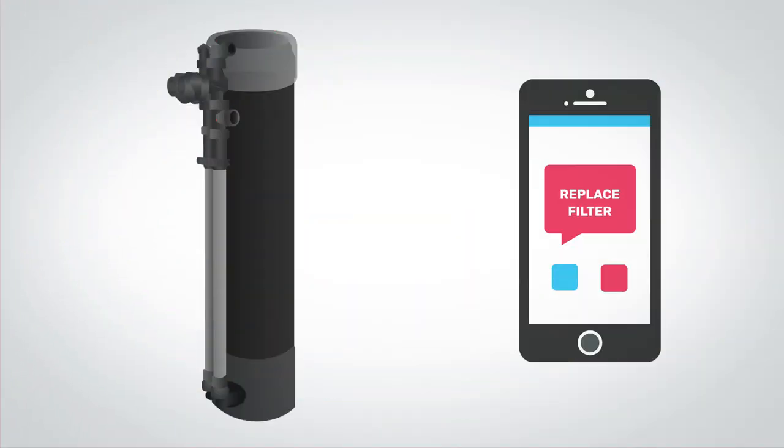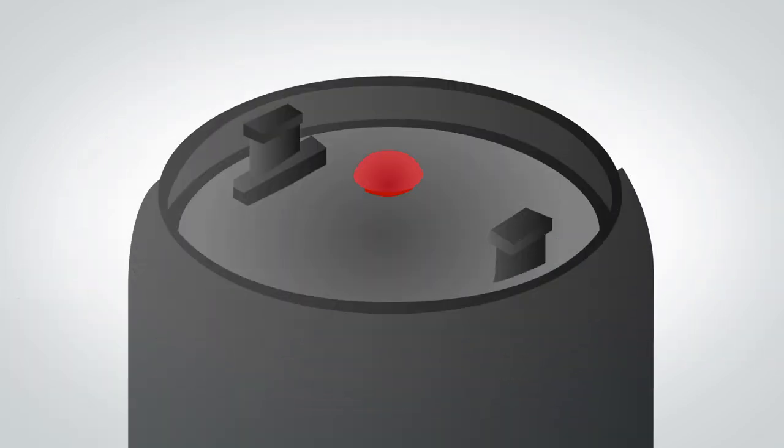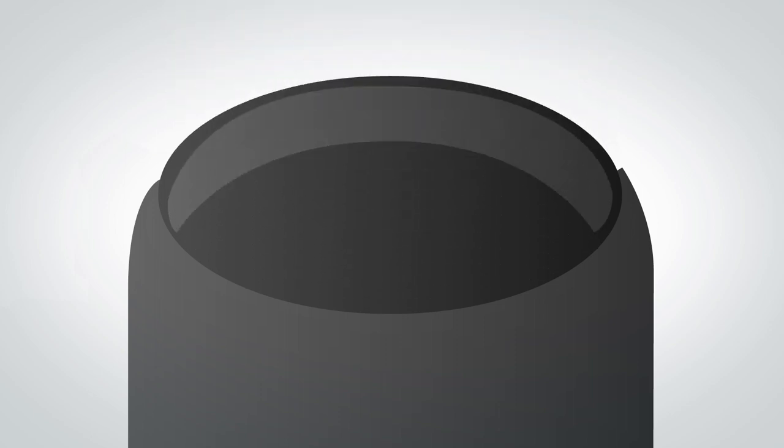Replacing the filter is easy and doesn't require any tools. First, turn the bypass valve to take the filter out of service. Then, press the red pressure release valve located underneath the cap of your system. Then, remove the snap ring and you will be able to remove the top cap with ease.